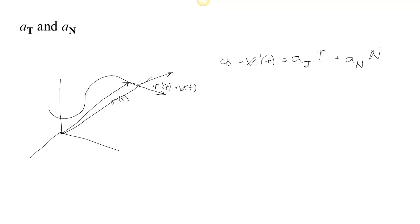And it turns out that the tangential component is speeding up or slowing down on the curve, the kind of acceleration that speeds you up and slows you down. And the normal component is the kind of acceleration that changes the direction of the velocity, the turning acceleration.